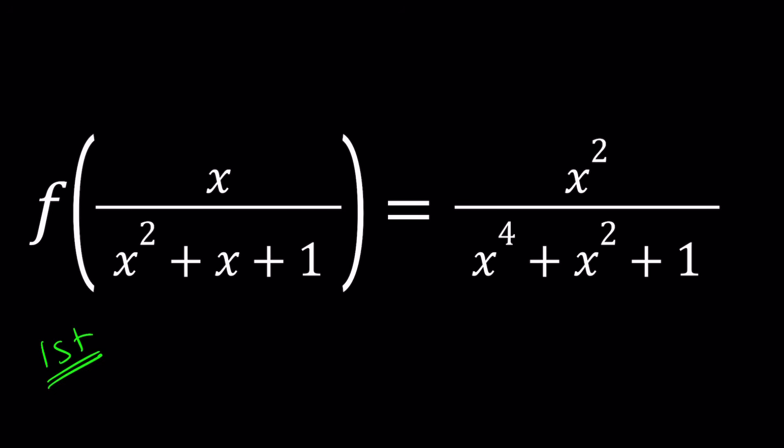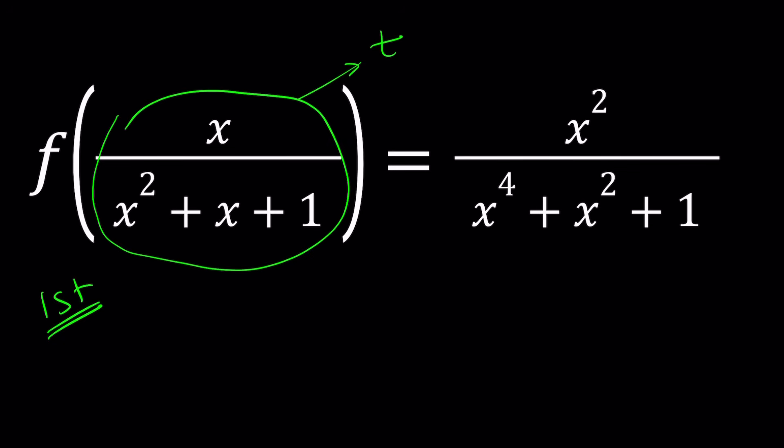Now, my first method is, since I'm trying to find an expression for f of x and I cannot do it directly, I'll do it indirectly. So I'm going to set this whole thing inside the parentheses on the left-hand side equal to another variable. How about t? By setting that whole thing equal to t, I'm finding something like f of t.